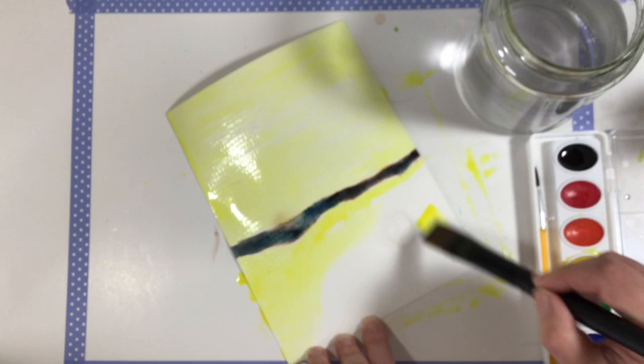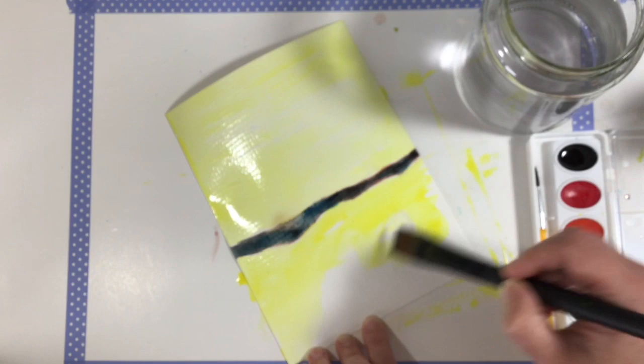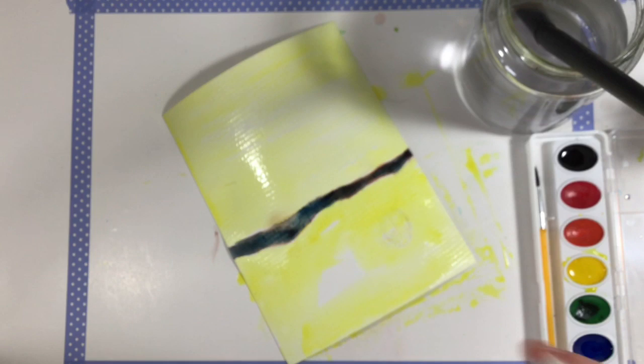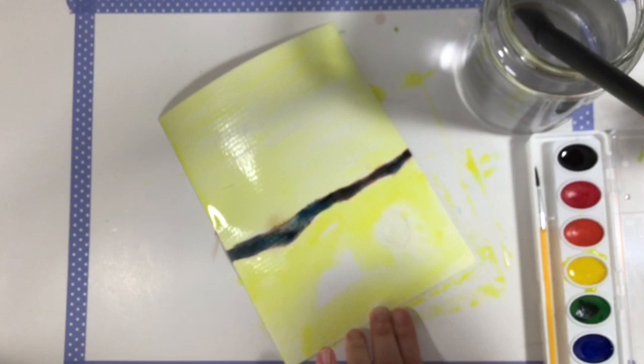Go across like this. Your sun is there so be careful working around your sun. It's going to be very subtle. If yours does what mine just did and covers over more than you would like, just take your rag there and lift some of it out.